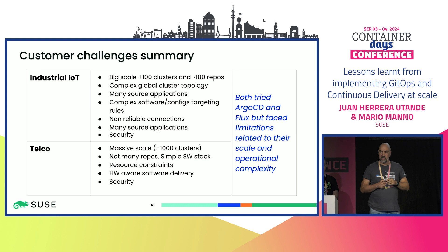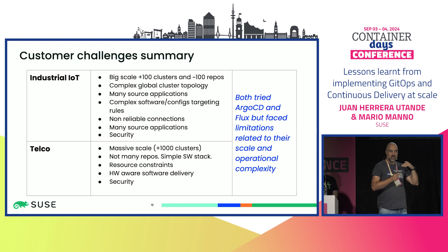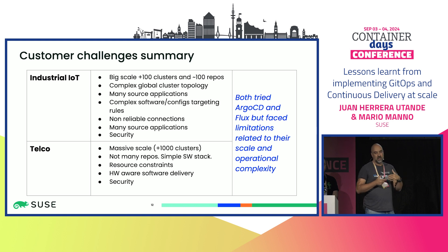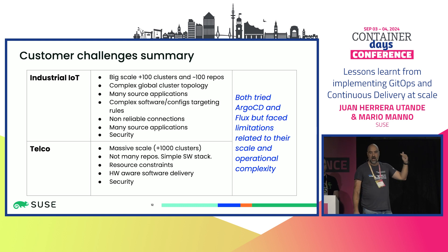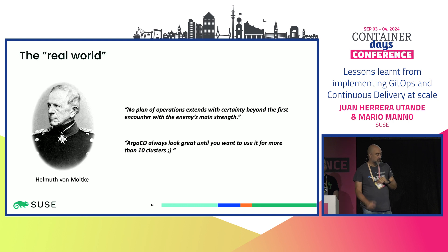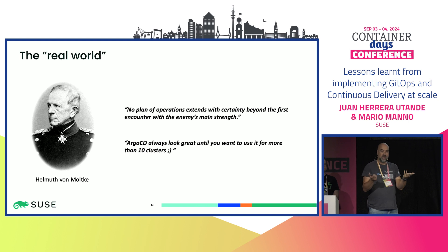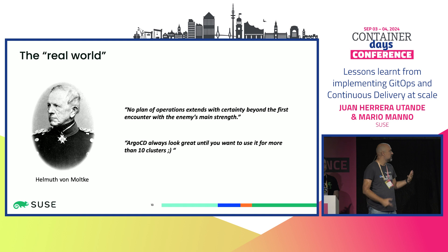This is a summary of the starting point for both projects, tackled initially with Argo CD and Flux — Argo CD for the industrial IoT customer and Flux for the Telco. This is not a discussion of Argo CD versus Flux versus anything else. It's just that these tools, which are really good, face challenges when you want to scale to hundreds or thousands of clusters, or hundreds of source applications. As the quote says: this is cool, but when we face the reality of scale, we have a real problem.